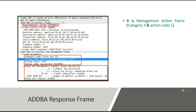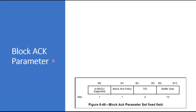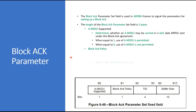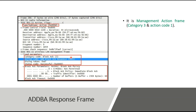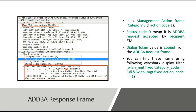The AddBA Response frame is also a management frame. The category is 3 and the action code is 1 — whereas in the AddBA Request it was action code 0. The status code 0 means the AddBA Request was accepted by the recipient station, indicating success. The dialog token value must be copied from the AddBA Request frame. You can find these frames using Wireshark display filters.